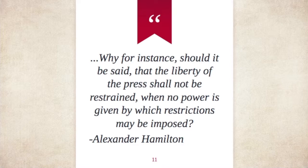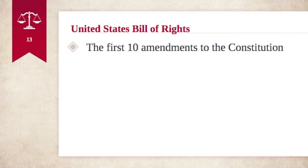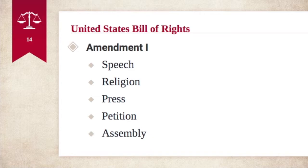There were two different sides with two different arguments for whether or not a Bill of Rights should be added. But the United States Bill of Rights was eventually created. The Bill of Rights was created on September 25th, 1789, and then later ratified on December 15th, 1791. The Bill of Rights is the first ten amendments to the Constitution. The most important is the First Amendment, which gives the freedom of religion, freedom of speech, freedom of the press, freedom to petition, and freedom of assembly.